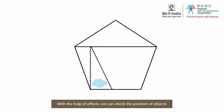By comparing the lengths of these offsets with those on the plan, we can check whether the position of the pond is correctly shown on the plan.